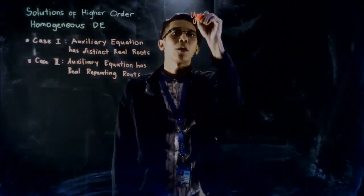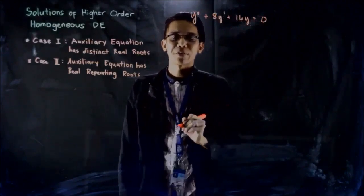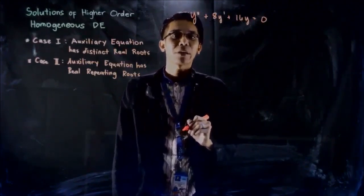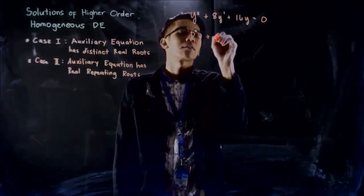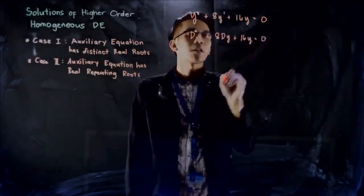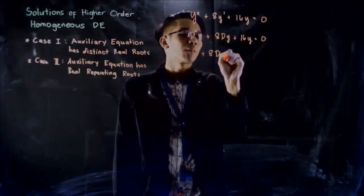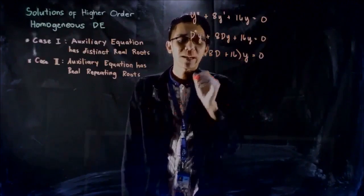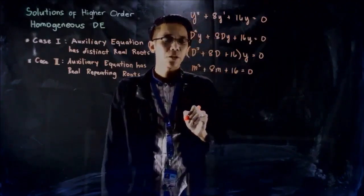Let's try to solve y double prime plus 8y prime plus 16y equals 0. We write this in operator form: the second derivative of y with respect to x, plus 8 times the first derivative of y with respect to x, plus 16y equals 0. Factoring out y gives (D squared plus 8D plus 16)y equals 0, and the auxiliary equation is m squared plus 8m plus 16 equals 0.